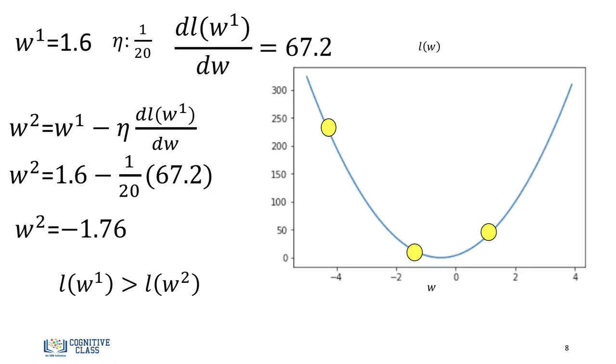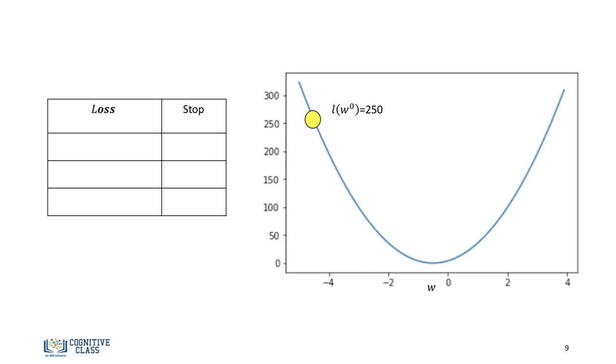There are several ways to stop the process of gradient descent. We could run it for a set number of iterations. But let's go over another way. So one way is to see if the loss starts increasing.